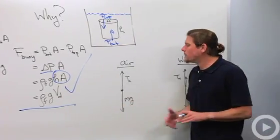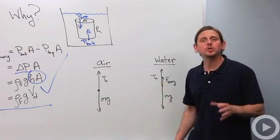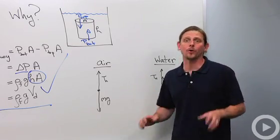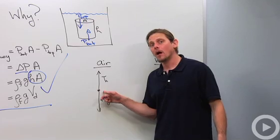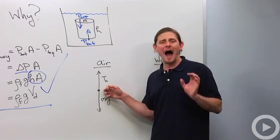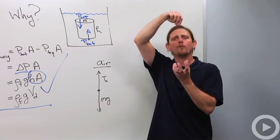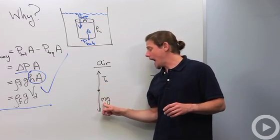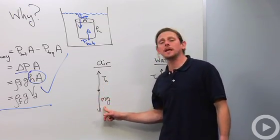Why do people care? One of the most famous uses of this principle in history has been to determine the density of valuable objects like crowns and vases — are they made of gold or is somebody trying to cheat me? All you need to do is weigh the object in air and then weigh the same object when it's submerged in water. When I weigh an object I've got a scale measuring how much force is required to suspend the object — a tension force up and weight down, so the tension equals mg.